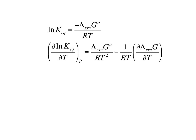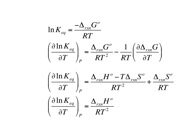When I take the derivative of the natural log of the equilibrium constant with respect to temperature, I have to remember that delta G is also a function of temperature, and so I need to use the product rule to find that derivative. Now let's recall that delta G is equal to delta H minus T delta S. Furthermore, the opposite of the derivative of delta G with respect to temperature is equal to the delta S of the reaction.